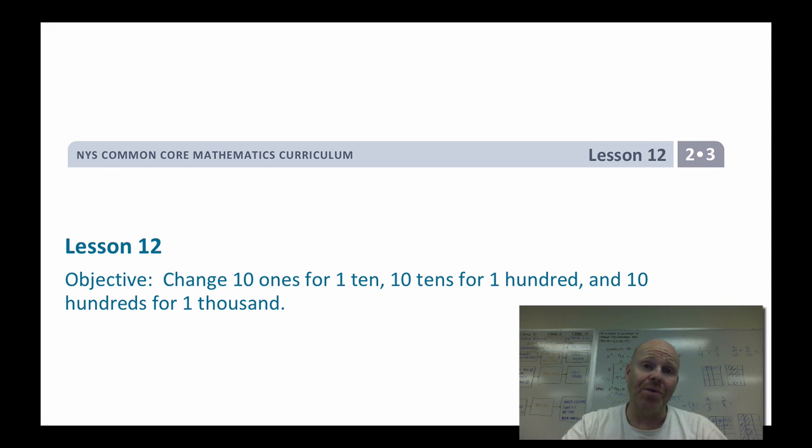In this video we're going to be talking more about how we are going to change 10 ones for a 10, or 10 tens for a hundred, and then even we're going to change 10 hundreds for a thousand. The idea is, as we're going, once we get a bundle of 10, we're going to cash it in for one in the next column higher. Let's get started on this.